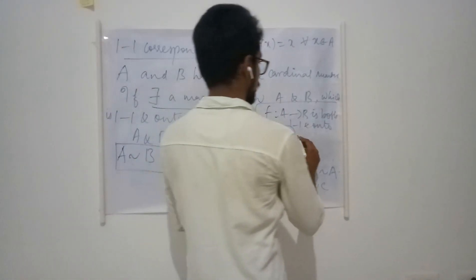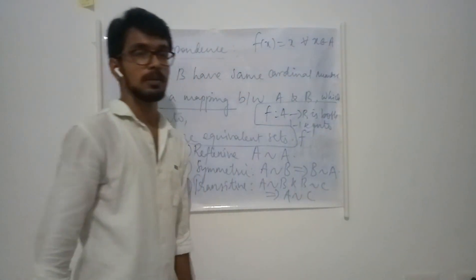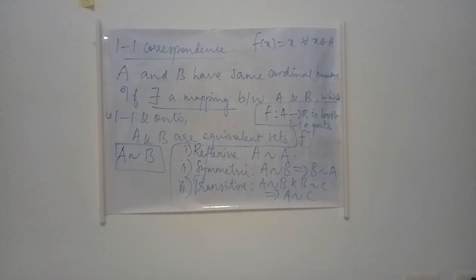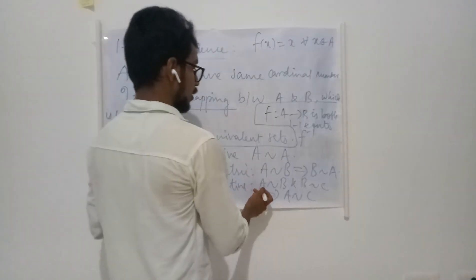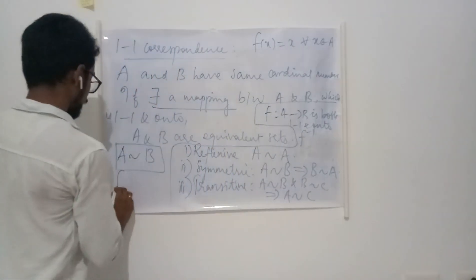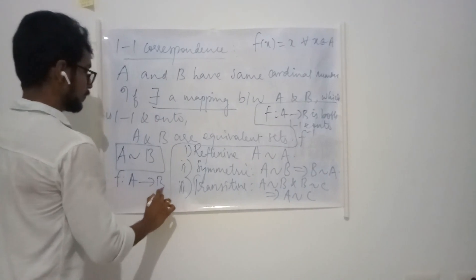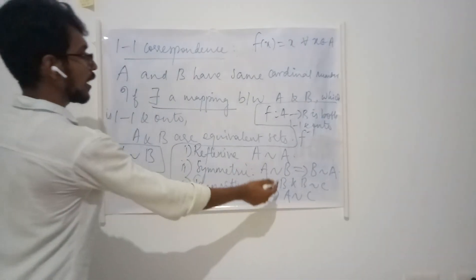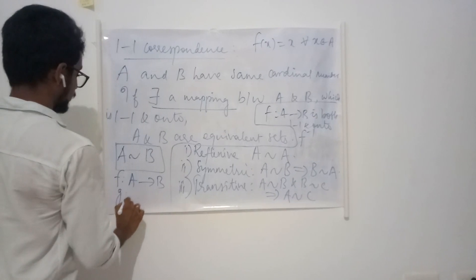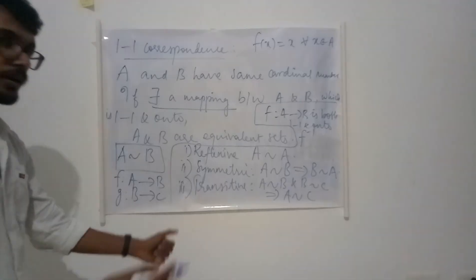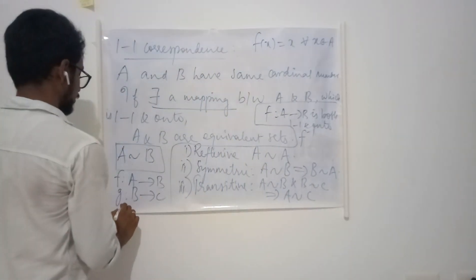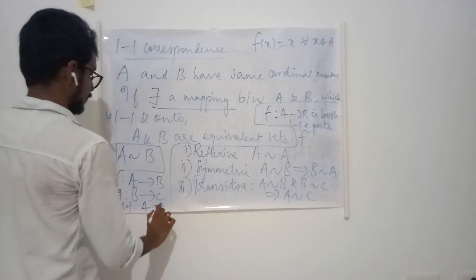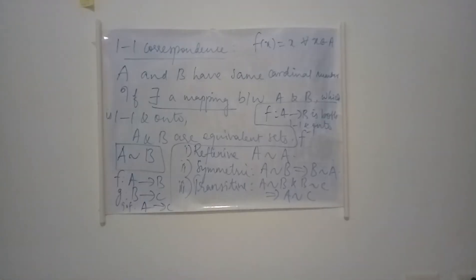If there exists a mapping F from A to B which is both one-to-one and onto, then the inverse mapping is also one-to-one and onto — this was studied in algebra. This gives us the symmetric property. For transitivity, if A is related to B (one-to-one onto mapping from A to B) and B is related to C (one-to-one onto mapping from B to C), then the composition of these two mappings gives a one-to-one onto mapping from A to C.